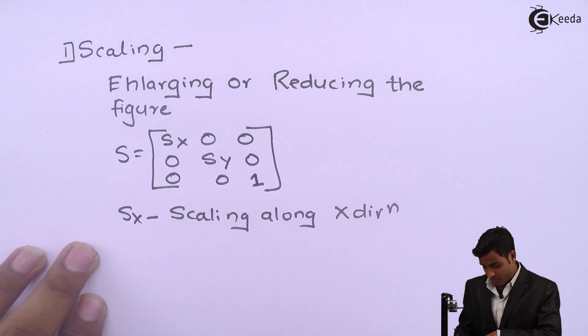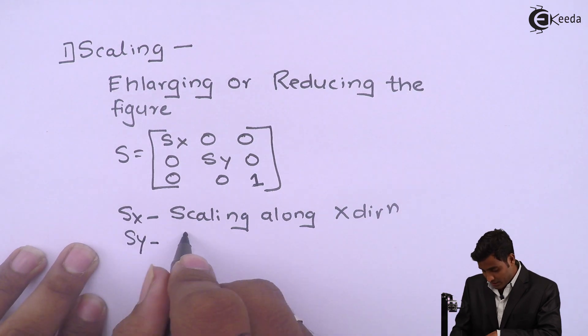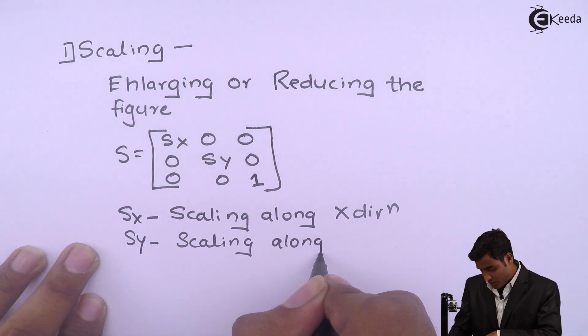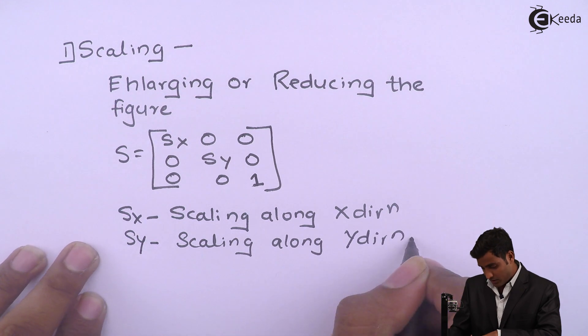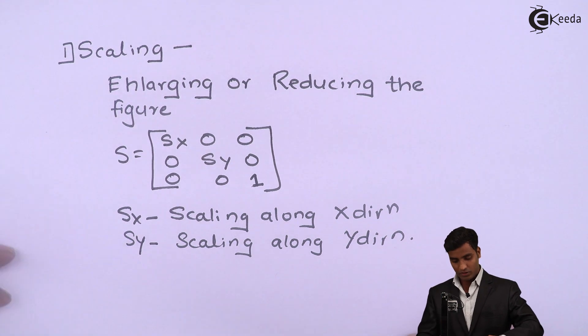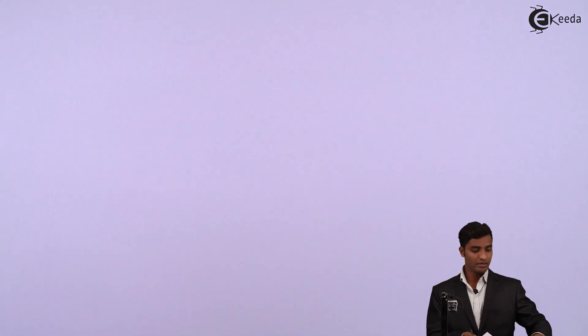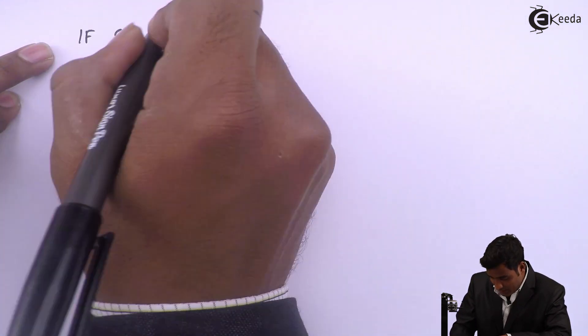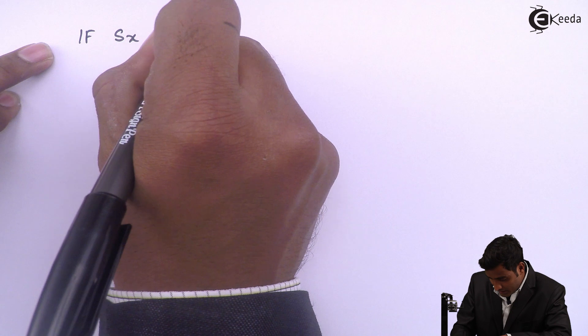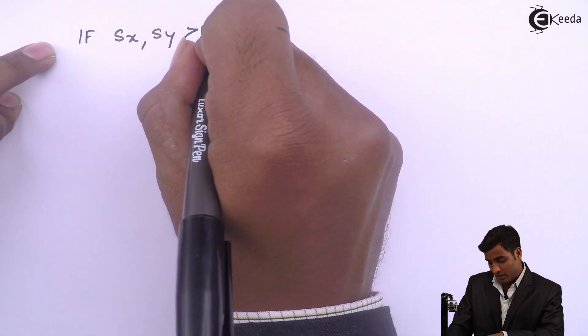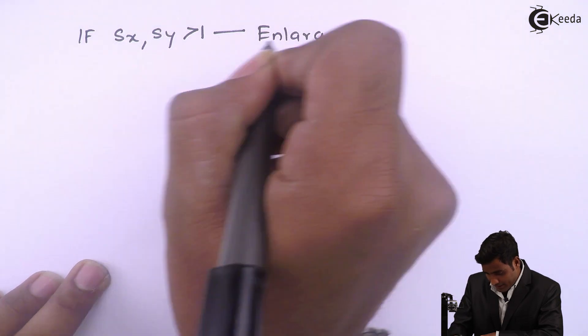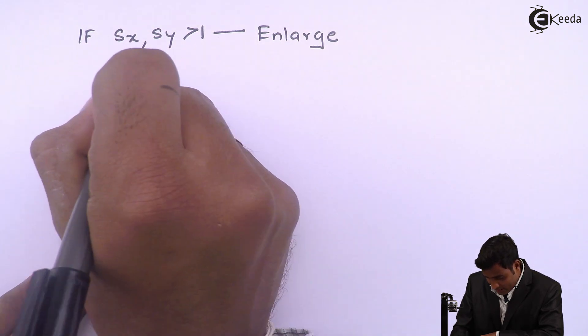And Sy means scaling along y direction. So there are three cases with reference to scaling. First is if Sx or Sy is greater than 1 then the figure is enlarged.